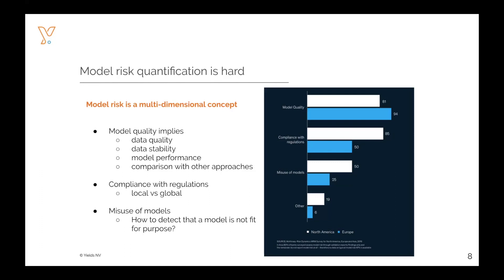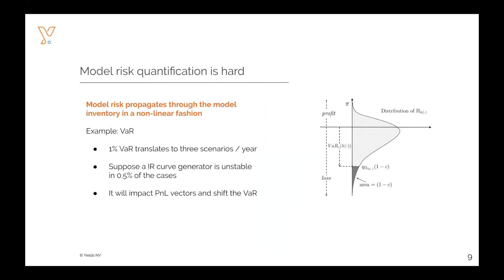One of the key challenges that institutions face today is how to summarize all those KPIs into a single risk quantification, a single number, a single model risk tier. On that topic, I would also like to notice that in general, model risk propagates in a nonlinear fashion through the model inventory.